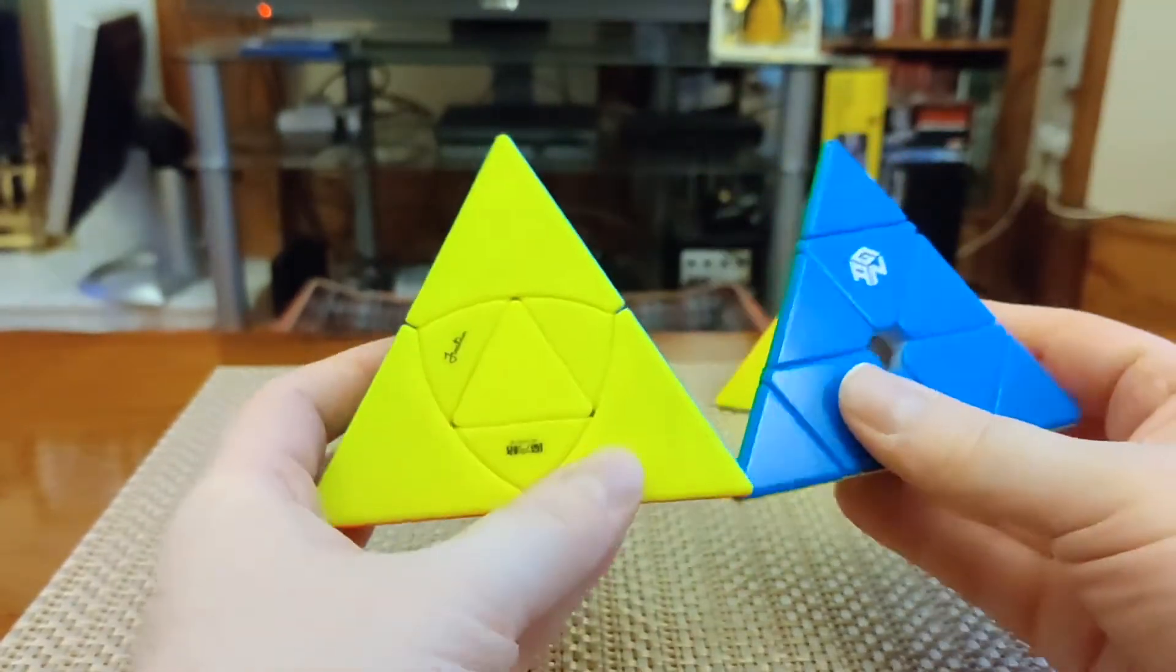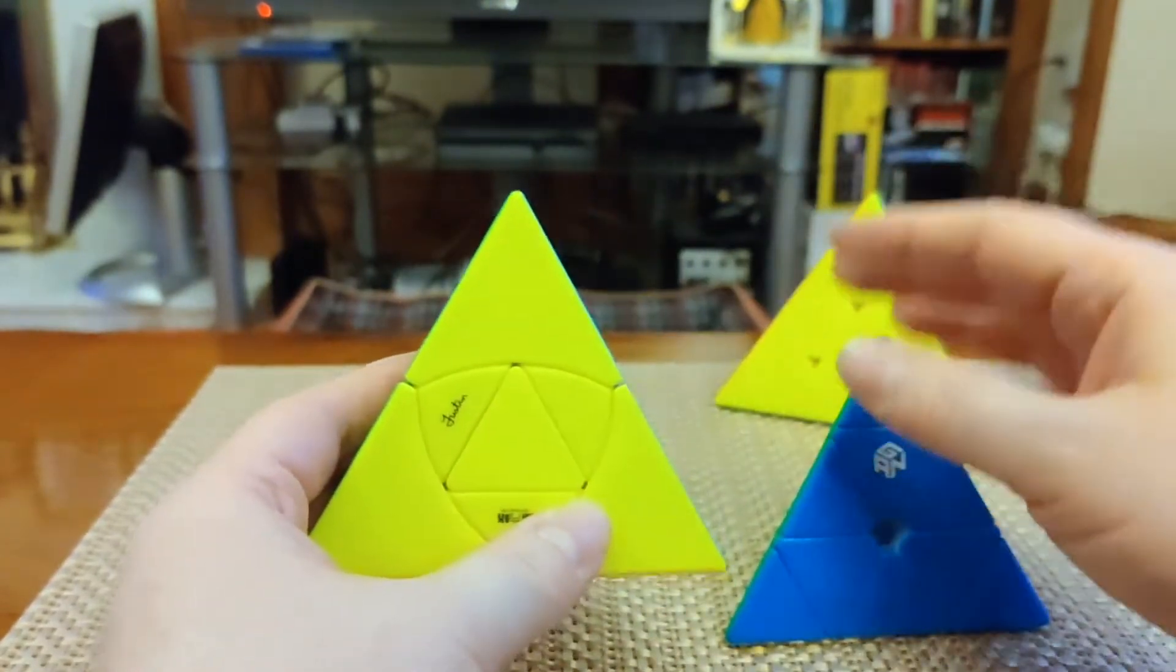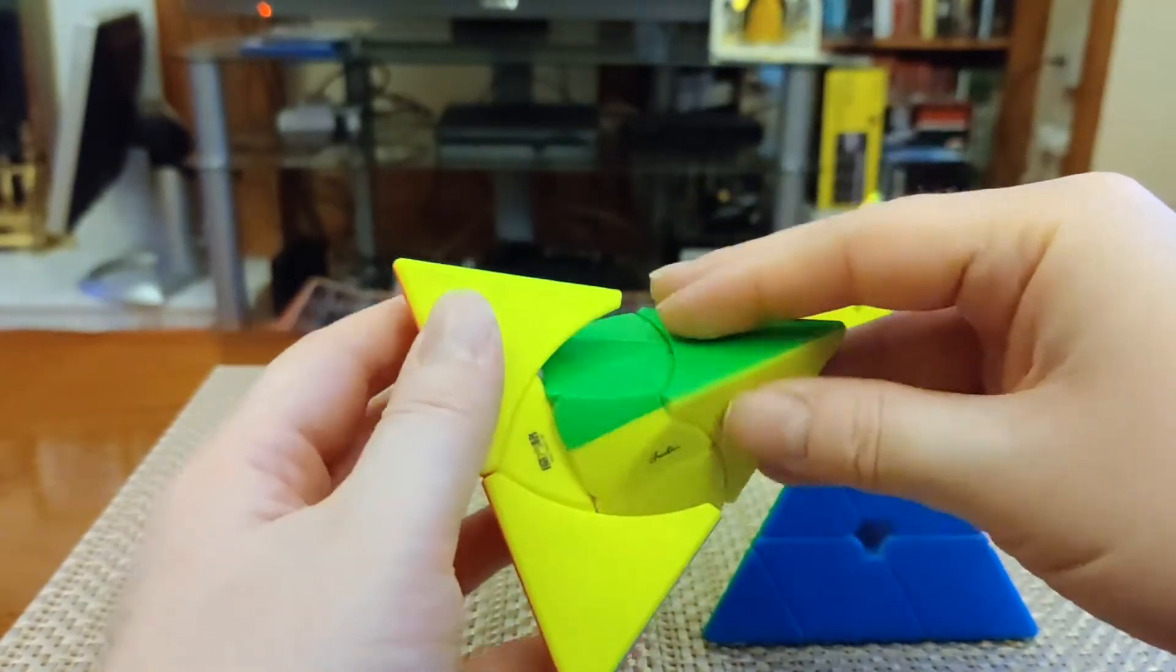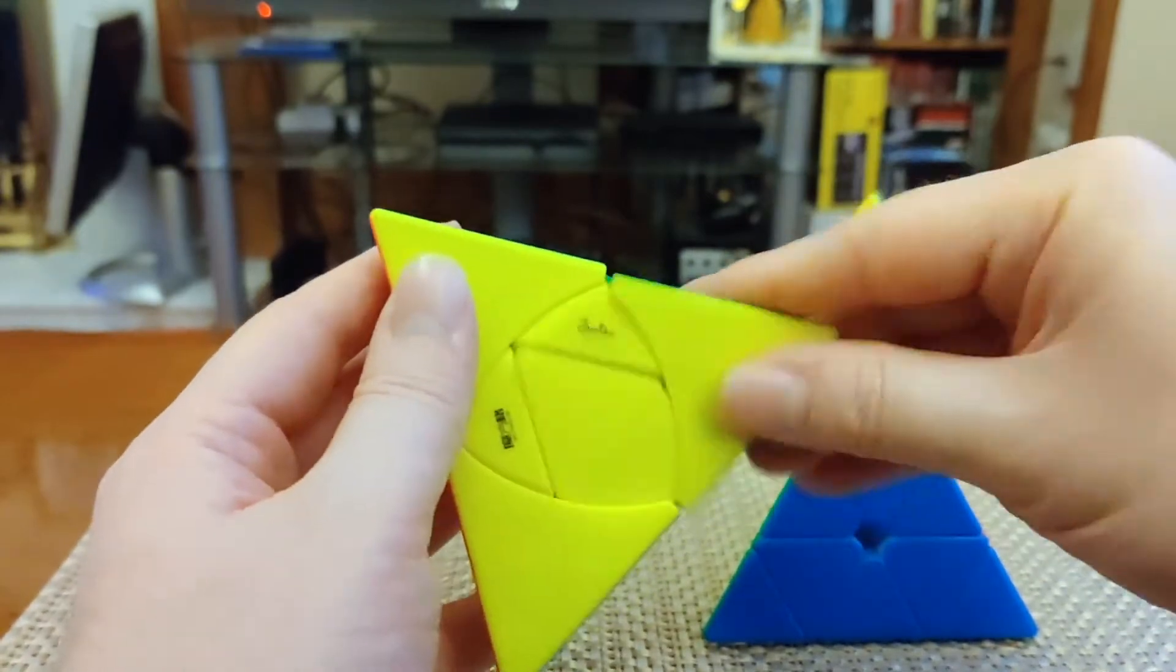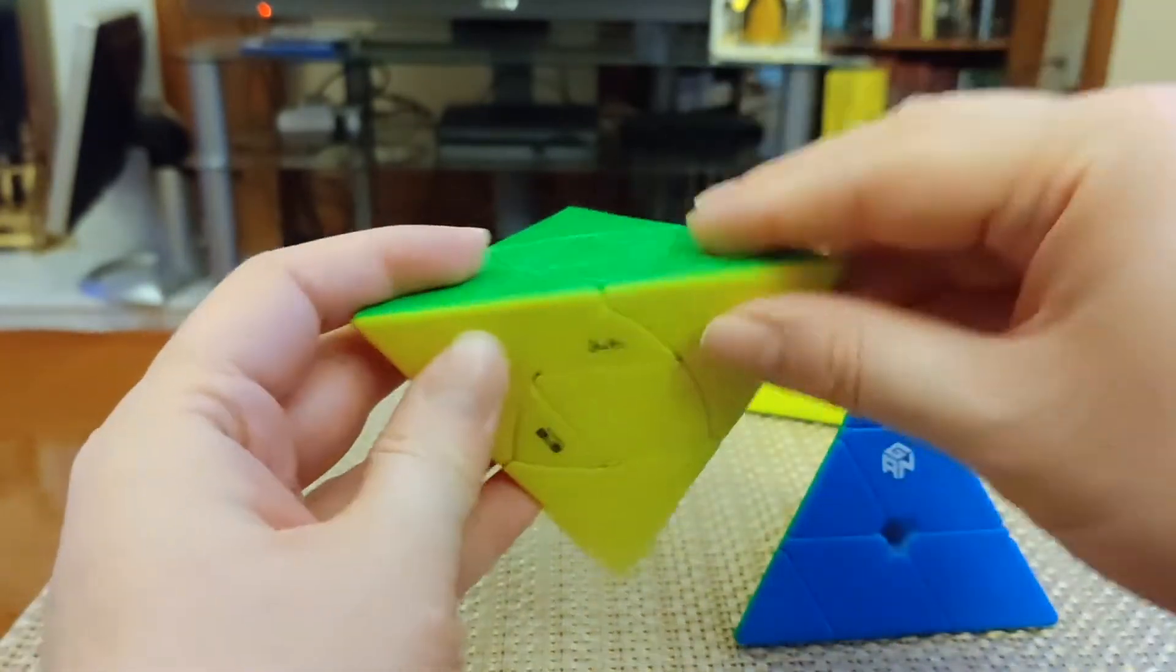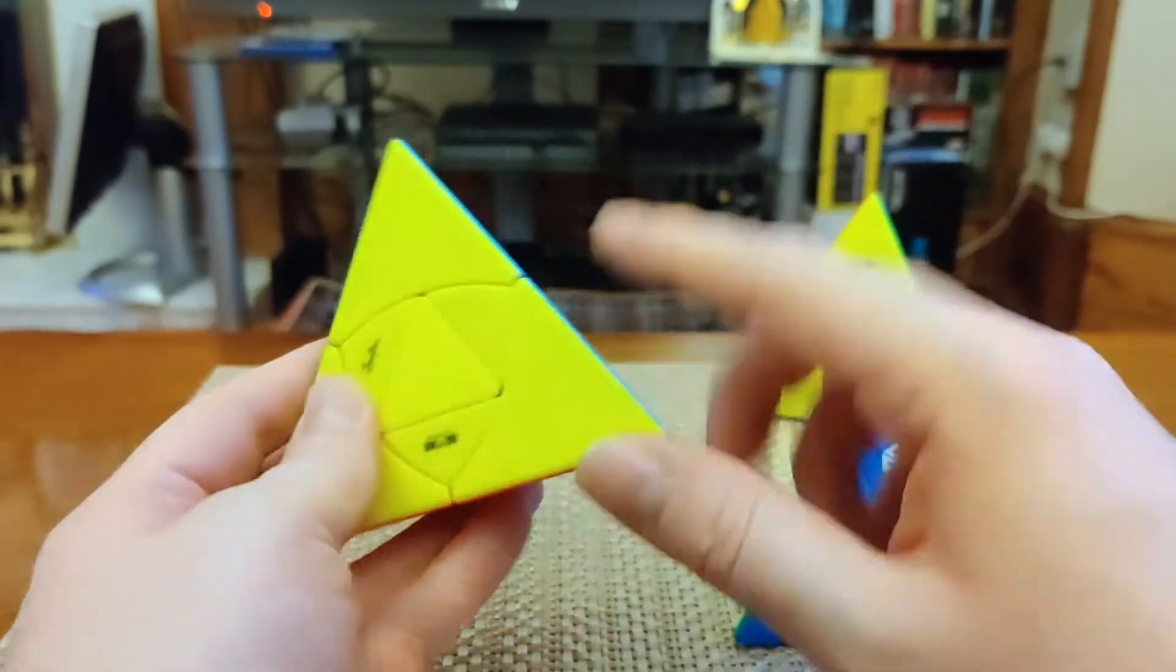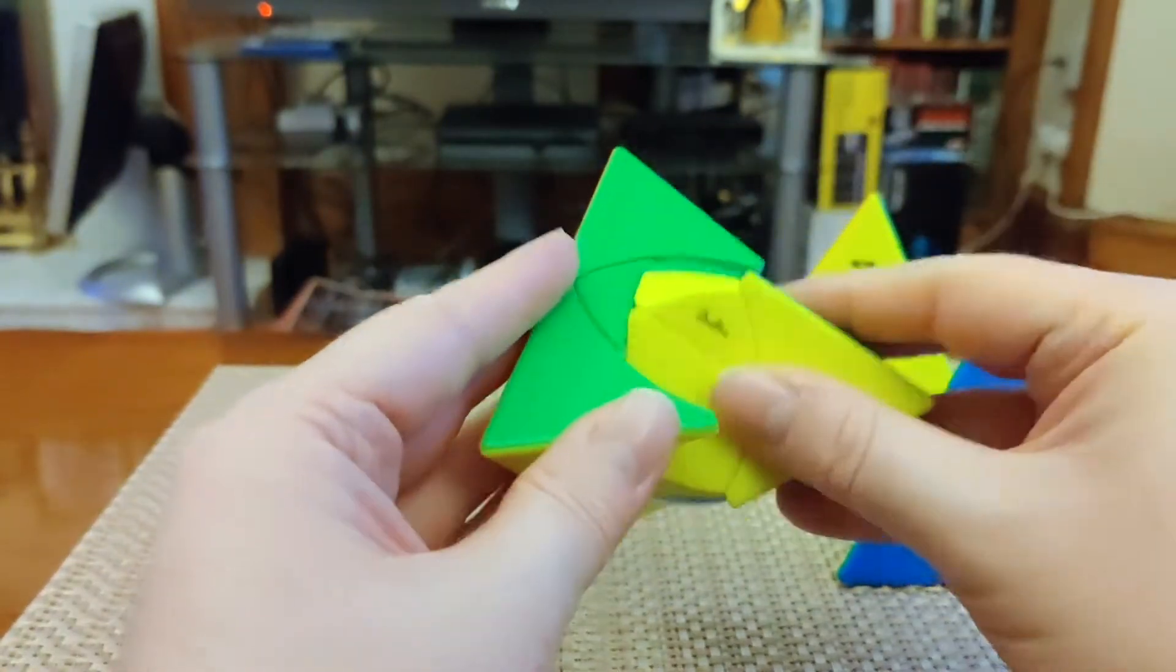Now if we compare this to the Duomo, which is basically the Jinx Pyraminx, you can immediately see some significant differences. We have our Trivial Tips here, but we don't have that on the Duomo. We just have these big chunky corners that actually participate in the solve. These are connected to three edge pieces, but we also have these exposed centers, which we don't have on the Pyraminx.